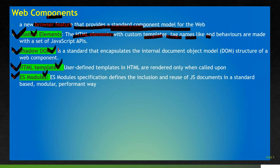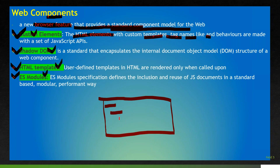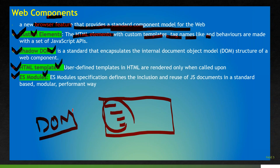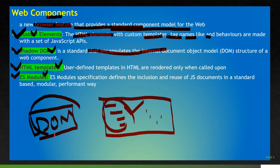Shadow DOM is a processor standard which encapsulates the internal DOM. Let's say I've developed a custom UI with some buttons and text boxes — that has a complete internal Document Object Model, and to render it we may need some CSS and JavaScript. Shadow DOM is a standard which encapsulates the internal Document Object Model structure of a web component.